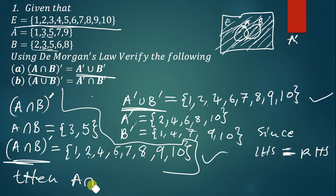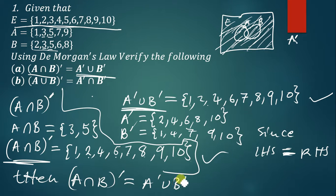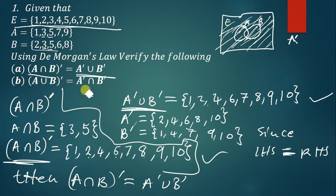Since the left hand side is equal to the right hand side, we can conclude: (A∩B)' = A'∪B'. That's the first De Morgan's Law verified. The second one is done in the same way.